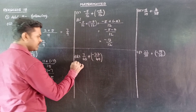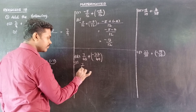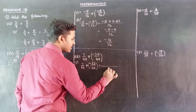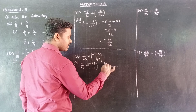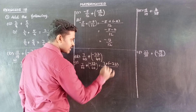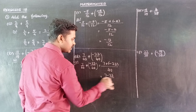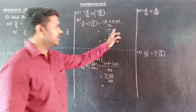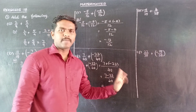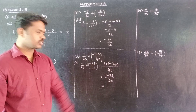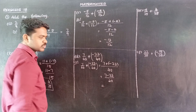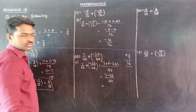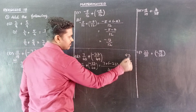Subdivision D: 7 by 40 plus minus 23 by 40. Denominators are 40, same. So numerator: 7 plus minus 23 — plus into minus is minus — so 7 minus 23 by 40. Different sign, so subtraction. 23 minus 7 is 16, and the greatest number 23 has a minus sign, so the answer is minus 16 by 40.